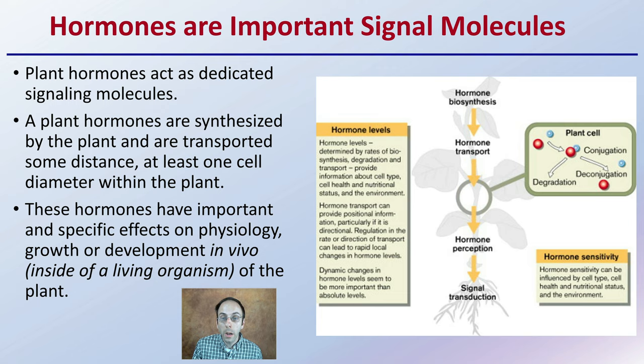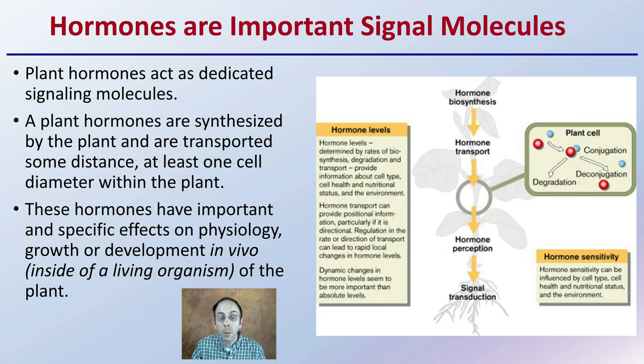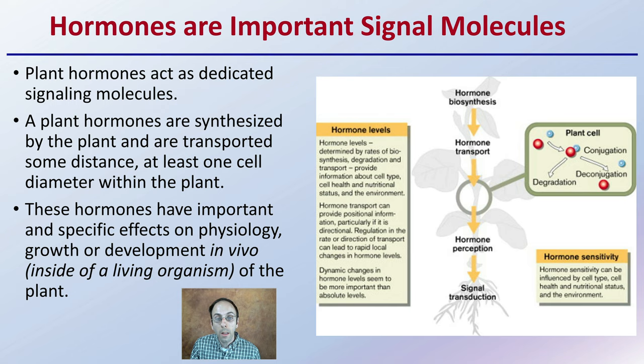Plant hormones act as dedicated signaling molecules. They are synthesized by the plant and transported at least one cell diameter within the plant. They might be produced in one part of the plant but have their effect in another. These hormones have important and very specific effects on the physiology, growth, and development in vivo — inside a living organism — signaling between cells throughout the organism.